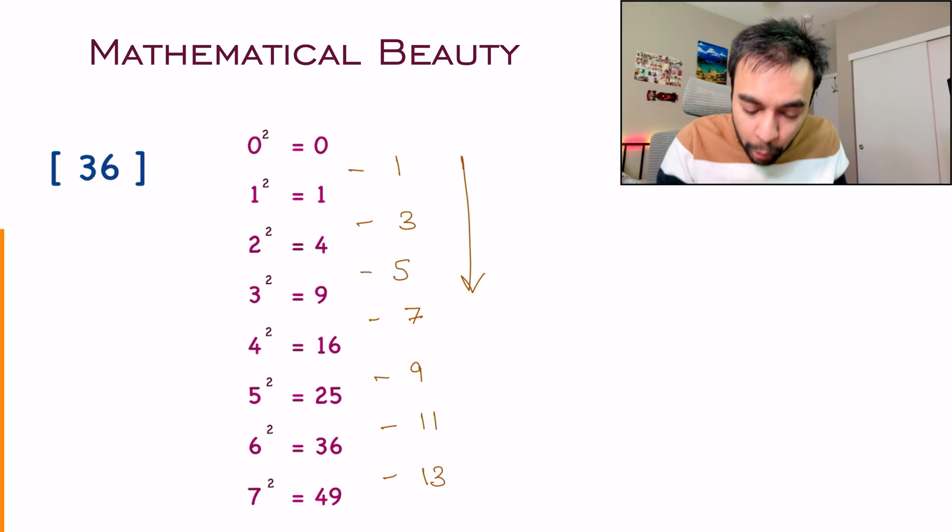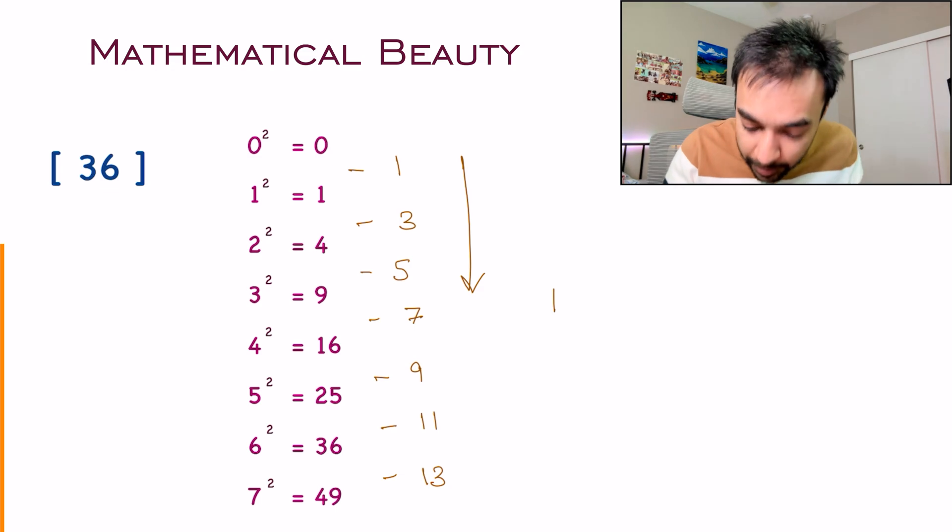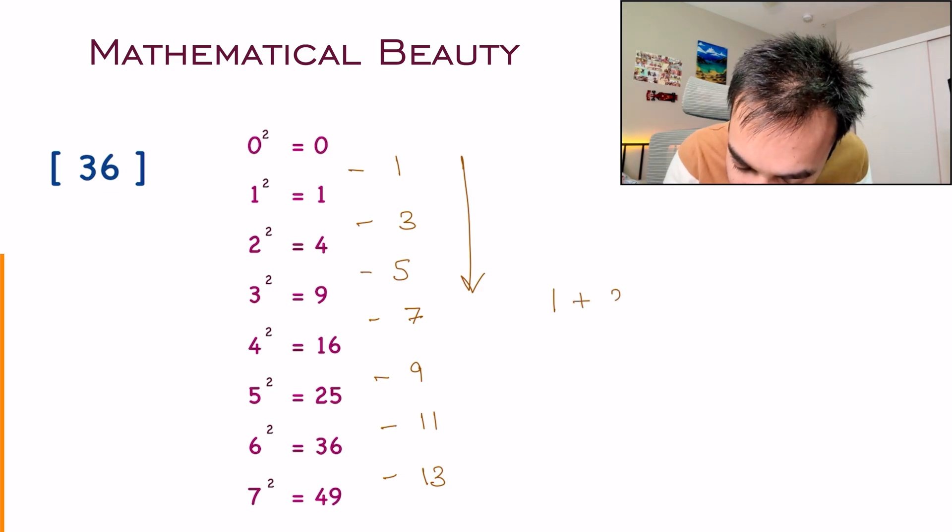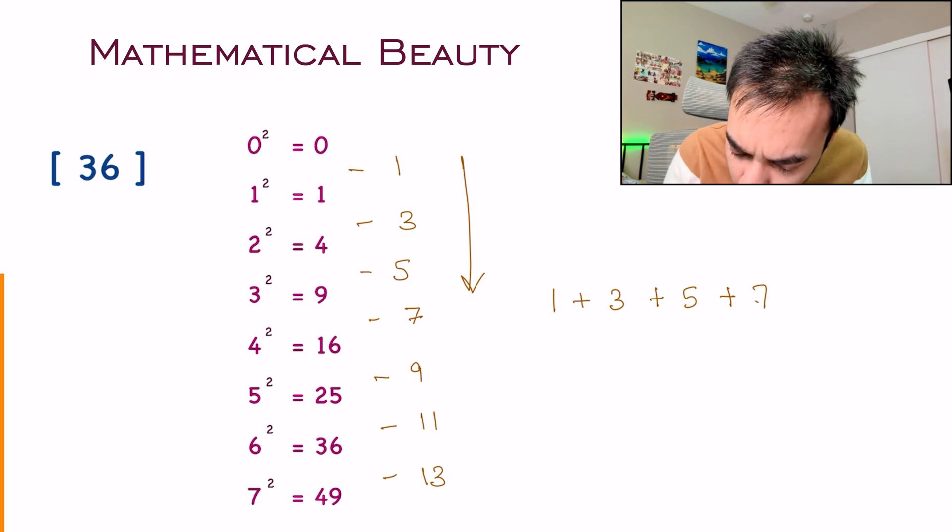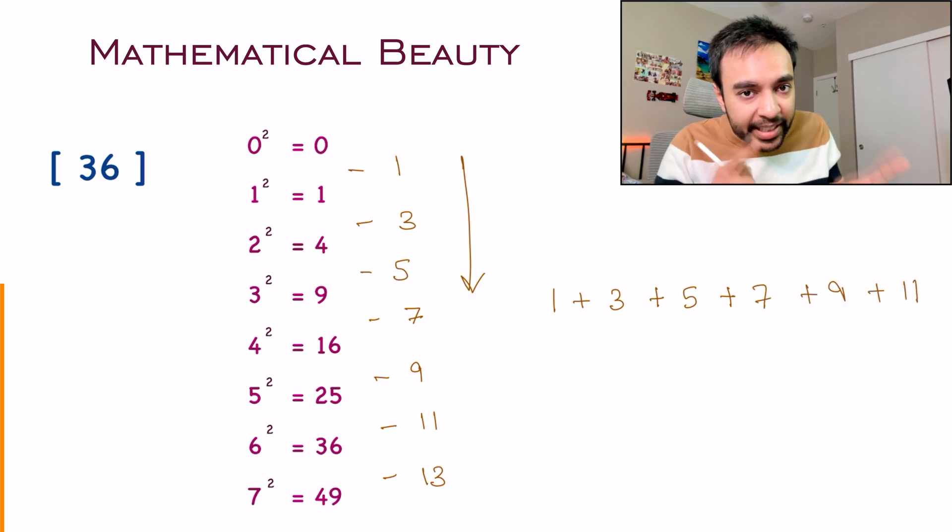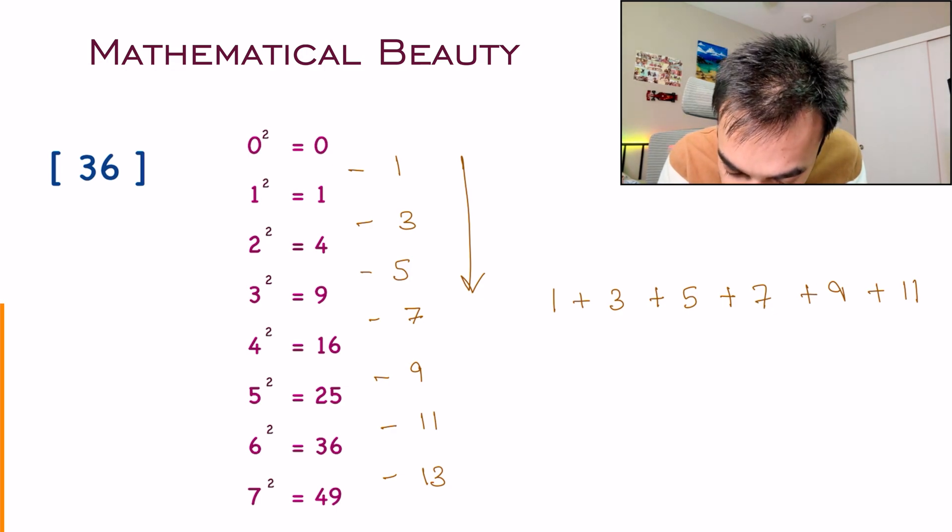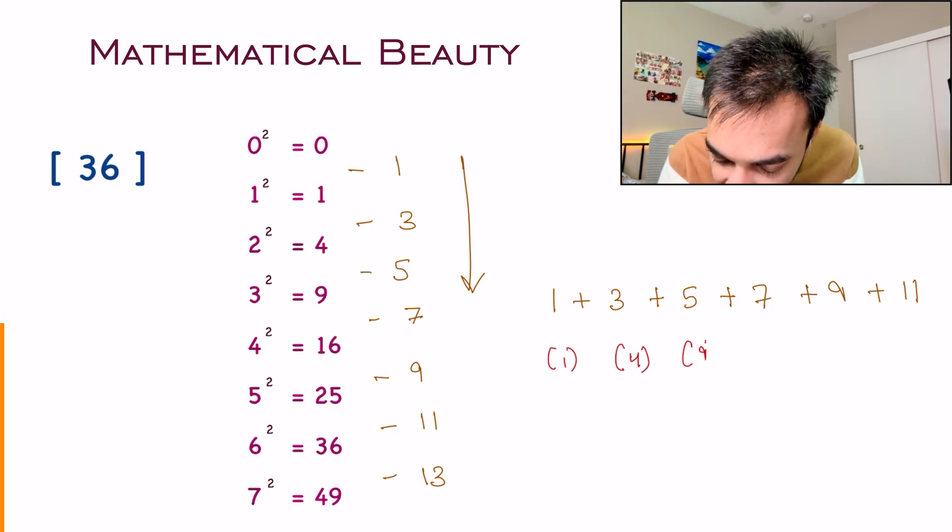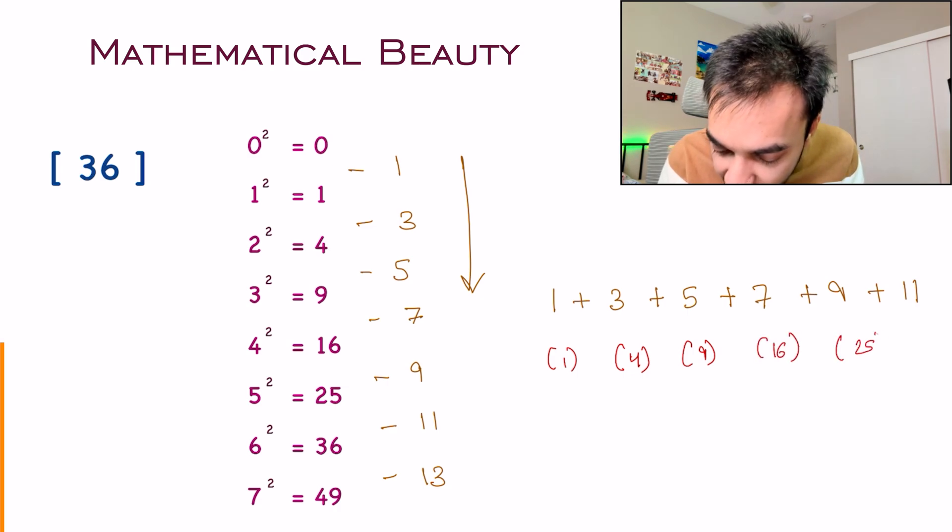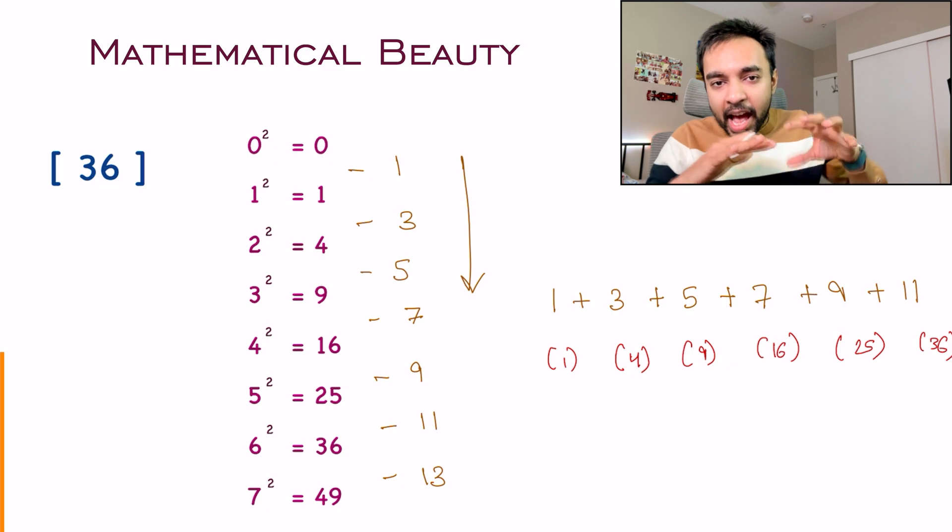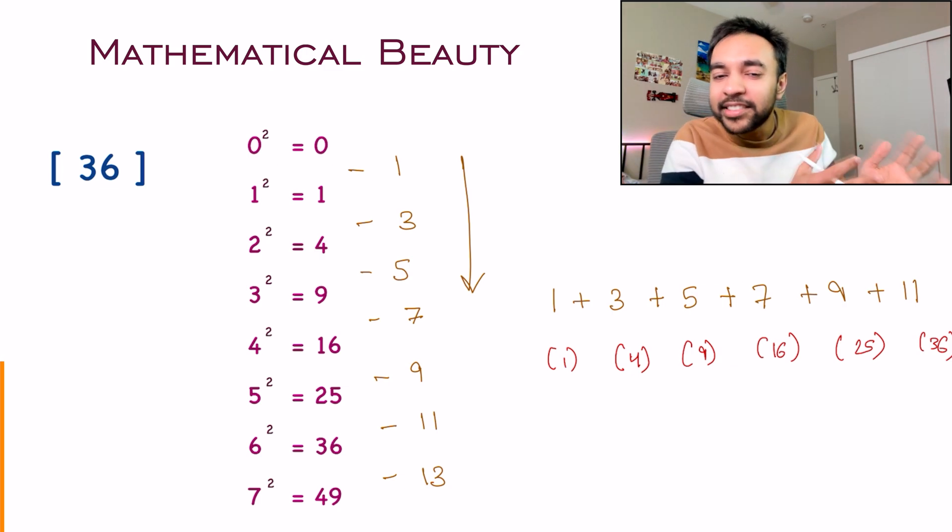At each of the iteration, you will keep on getting perfect squares. So first, I got 1. Then I got 4. Then I got 9. Then I will get a 16. Then I will get a 25. And then I will get a 36. I believe you are able to easily see the solution now. Just keep on adding all of these numbers. If you encounter this particular number somewhere, you know that you have found a perfect square. And you can simply return a true.